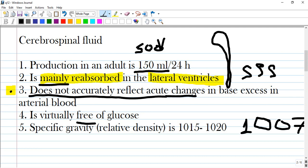Does not accurately reflect acute changes in base excess in arterial blood - this one is correct. Is virtually free of glucose - it does contain glucose in a low quantity. And specific gravity or density is 1007.